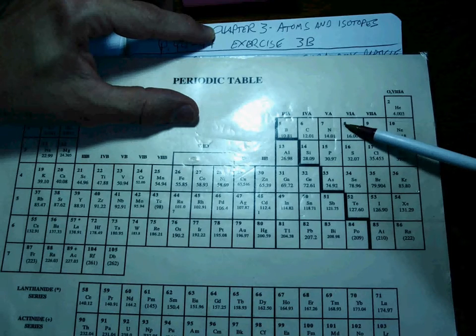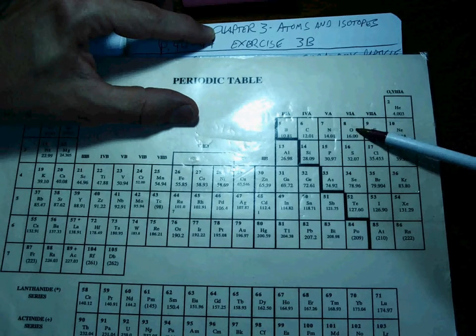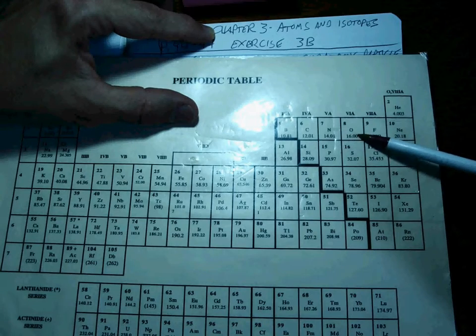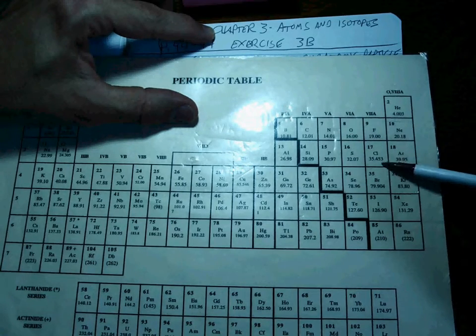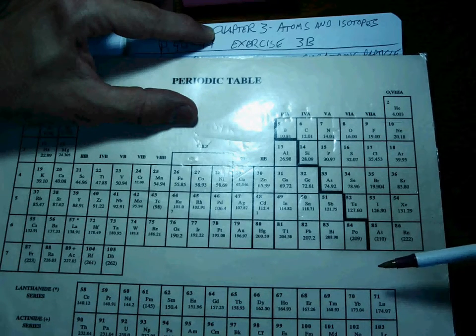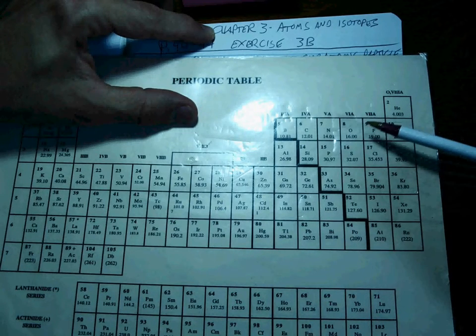If it has eight protons, it's a different element entirely. It becomes oxygen. We don't discuss these numbers in this chapter, so you're not looking at these. These are the molar masses. That's something that we talk about in chapter five.